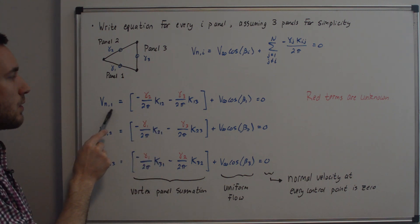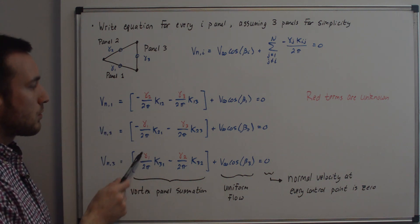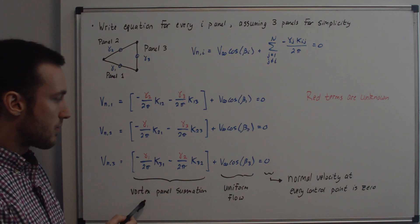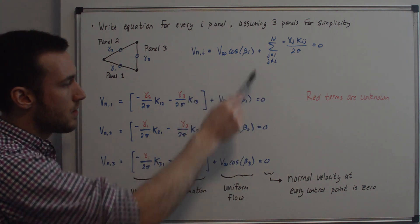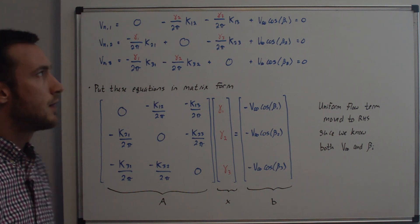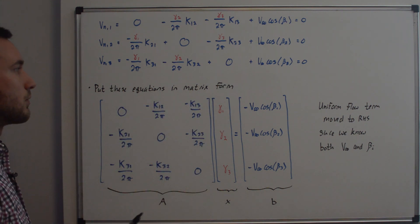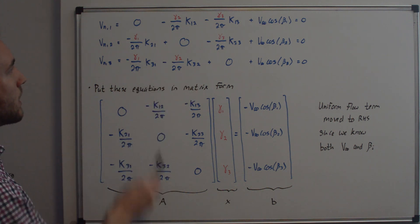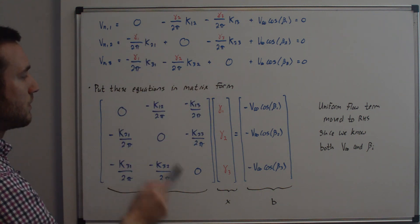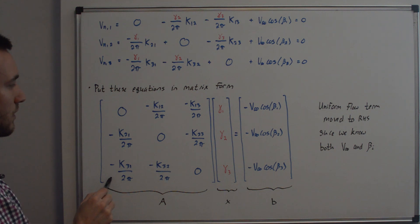The same is true for the vn_1 and vn_3 equations. All unknowns are shown in red — we have three unknowns: gamma_1, gamma_2, and gamma_3. The bracketed terms come from the vortex panel summation, the cosine terms are from the uniform flow, and equals 0 reflects the no-flow-through condition. Taking these equations and putting them into matrix form, the coefficients of all gamma terms form the A matrix. On the main diagonal we have zeros, and on the off-diagonals we have values like negative k_21 over 2 pi. In the x array we have the unknowns: gamma_1, gamma_2, gamma_3.